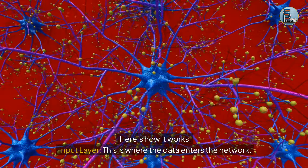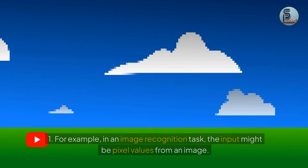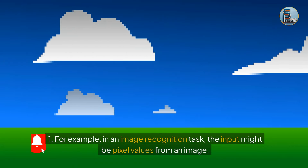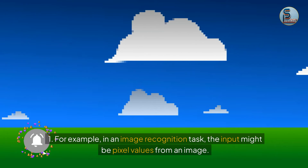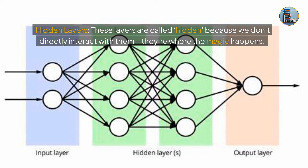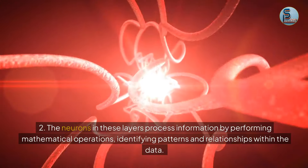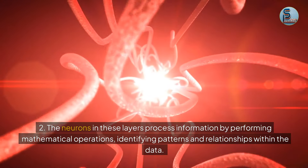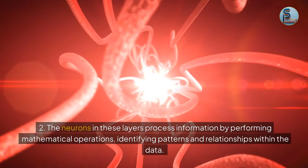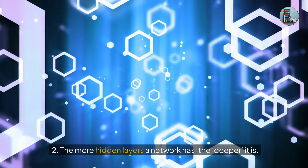Here's how it works. The input layer is where the data enters the network — for example, in an image recognition task, the input might be pixel values from an image. Hidden layers are where the magic happens: neurons in these layers process information by performing mathematical operations, identifying patterns and relationships within the data. The more hidden layers a network has, the deeper it is.